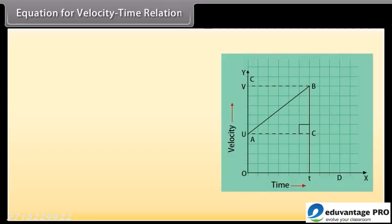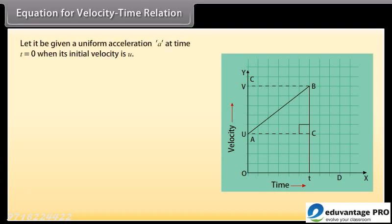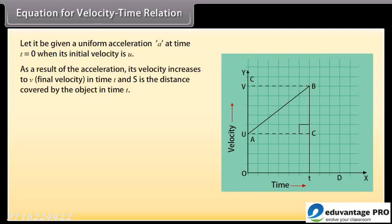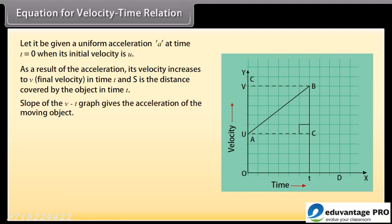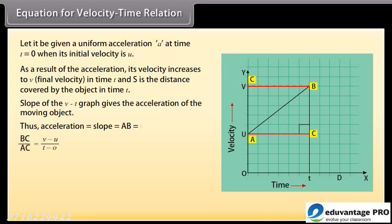Equation for velocity-time relation. Consider an object moving with uniform velocity U in a straight line, given a uniform acceleration A at time T = 0. Its velocity increases to V in time T. The slope of the velocity-time graph gives acceleration: A = (V - U) / T. Rearranging: V - U = AT, therefore V = U + AT. This is the first equation of motion.